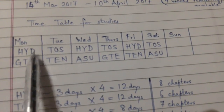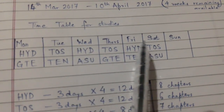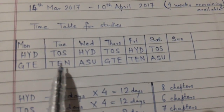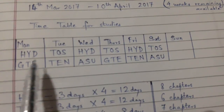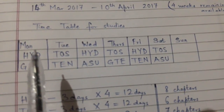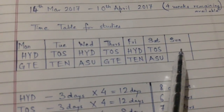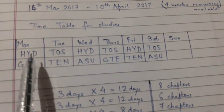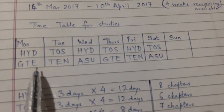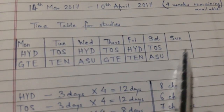On Thursday, study TOS and GTE. On Friday, study Hydraulics and TEN. On Saturday, study TOS and ASU. Hydraulics and TOS are each scheduled for three days per week, while GTE, TEN, and ASU are each covered for two days. Sunday is kept blank as a buffer day for any missed or incomplete topics.